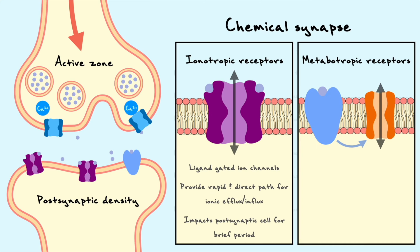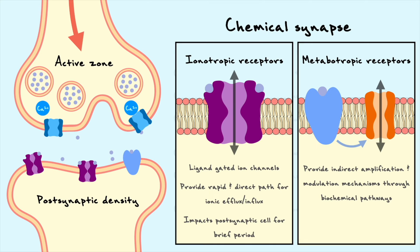Metabotropic receptors, on the other hand, have more indirect effects. When stimulated, they produce second messengers such as cAMP or diacylglycerol that typically activate protein kinases with a multitude of physiological impacts — one being the phosphorylation of other ion channels, regulating their opening or closing. Because of these indirect effects, metabotropic receptors provide amplification and modulation mechanisms through second messengers that can impact the cell for considerably longer periods than ionotropic receptors.